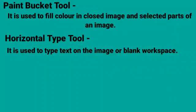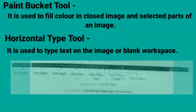Paint Bucket Tool: It is used to fill color in closed images and selected parts of an image. Horizontal Type Tool: It is used to type text on the image or blank workspace. Thanks and have a nice day.